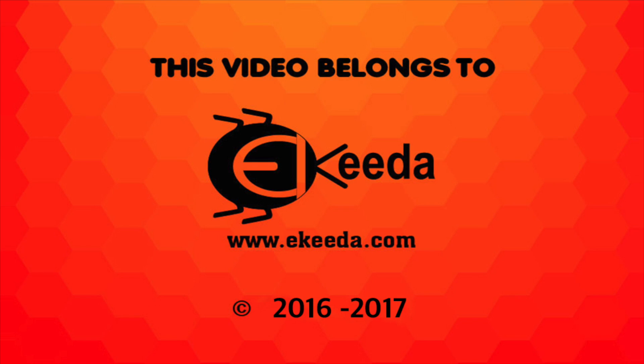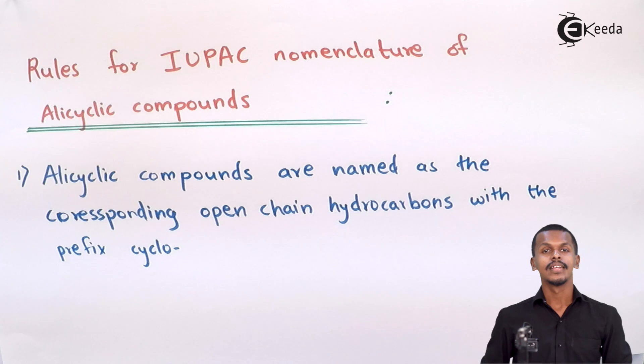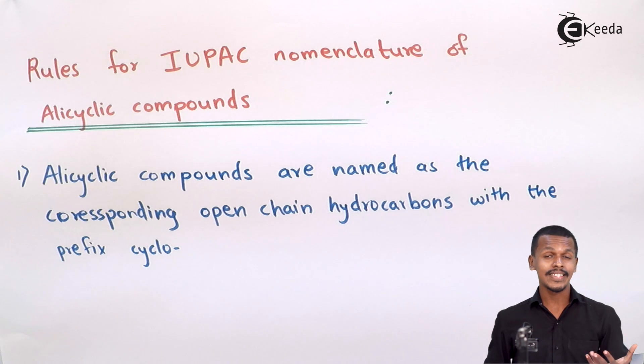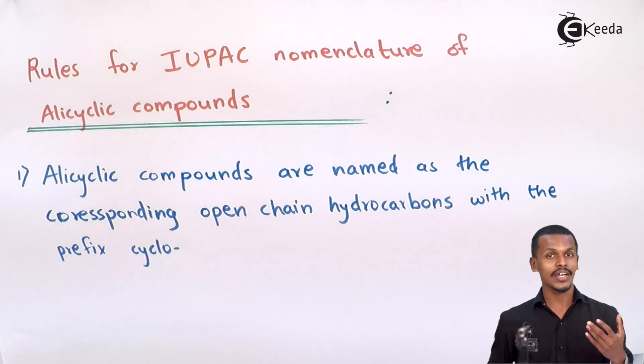We are going to discuss the rules of IUPAC nomenclature for alicyclic compounds. In the previous lesson we discussed the rules for IUPAC nomenclature of organic compounds that consist of functional groups. Now we look at what special considerations apply when naming a structure that is alicyclic in nature.